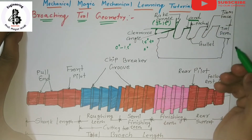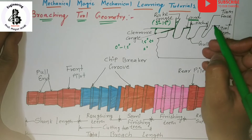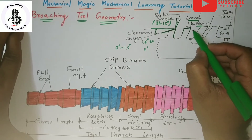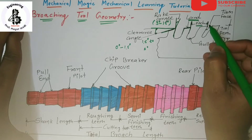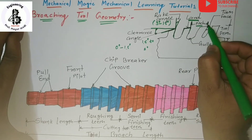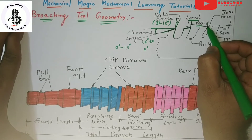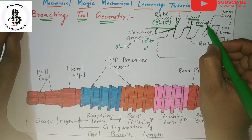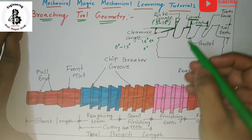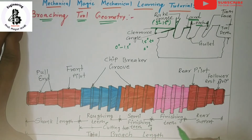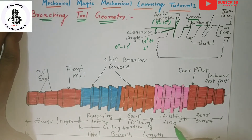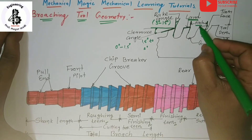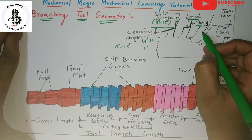Depending upon the material, the rack angle values vary from 3 to 15 degrees. The next part is the pitch. Generally pitch represents the linear distance from the cutting edge of one tooth to the corresponding next tooth. Pitch differs for roughing teeth, semi-finish teeth, and finishing teeth, so different pitches can be made on a single broaching tool depending on the operations required.